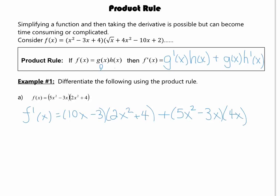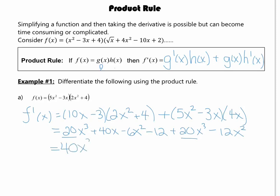Now we need to expand and simplify. Expanding the first product gives 20x cubed plus 40x minus 6x squared minus 12, and then we have plus 20x cubed minus 12x squared. Collecting like terms, we get 40x cubed minus 18x squared plus 40x minus 12.